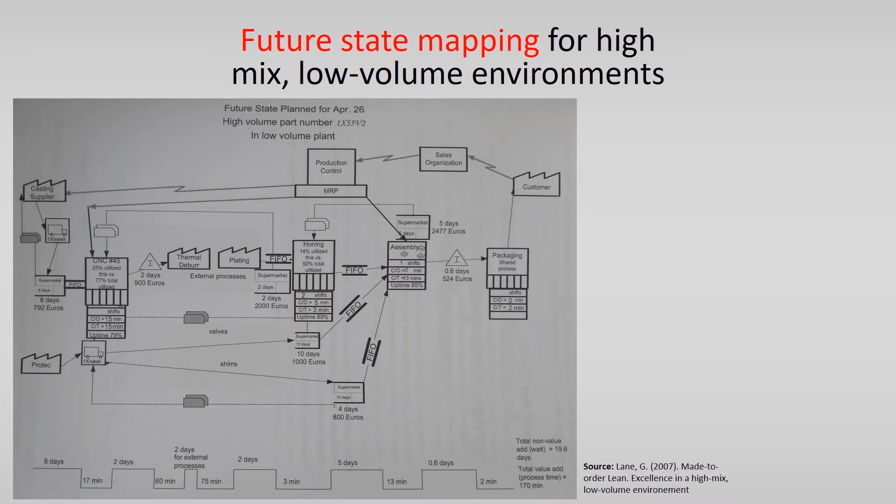A couple of suggestions for a future state map in high-mix, low-volume environments are to put in pull systems wherever possible, then focusing on expensive inventories.